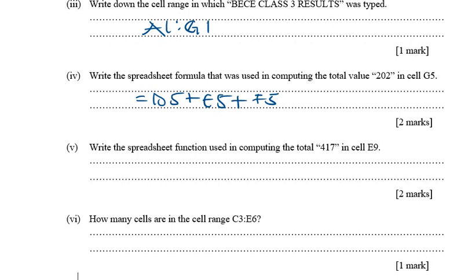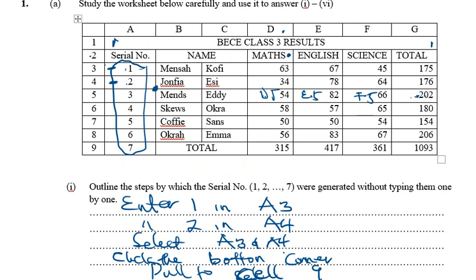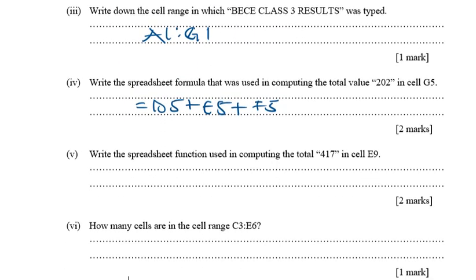The next part says: write the spreadsheet function used in computing the total 417 in cell E9. Note: this asks for a function, not a formula. Looking at cell E9, it is the sum of the cells above it — E3 through E8. So you write: =SUM(E3:E8). That's the difference between a function and a formula.